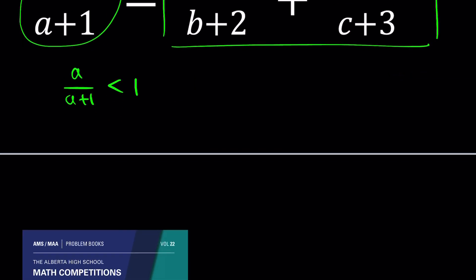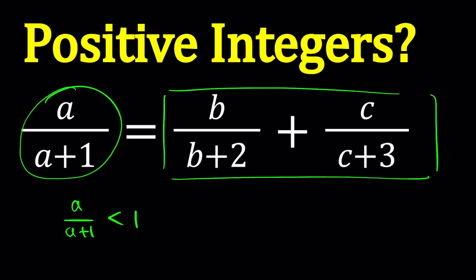So here's what we're going to do. We start with a over a plus one is less than one, and since we have this expression on the right hand side, either you're going to write this on the left hand side, or you're going to reverse the inequality. Again, this problem is from Alberta High School math competitions. They made a really good compilation of problems from 1957 all the way to 2006. It's a beautiful collection.